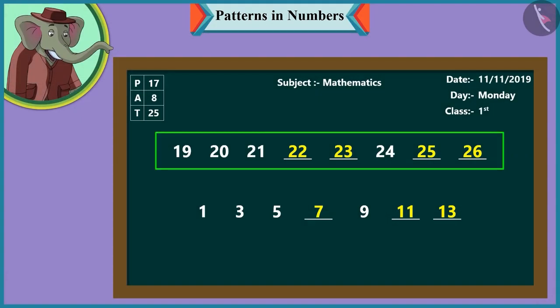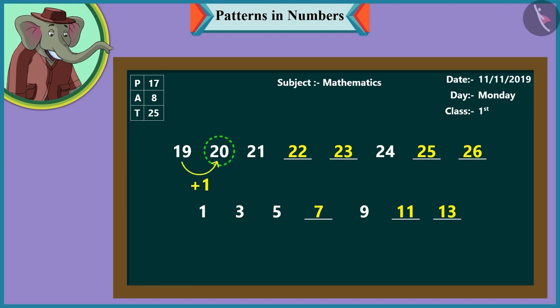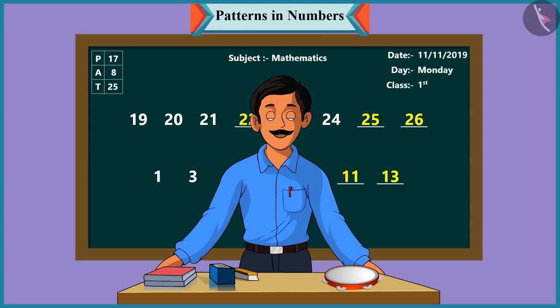Children, here in the first number pattern, one has been added to each number to take it forward. Like adding one to nineteen makes twenty, and adding one to twenty makes twenty-one. And in the next pattern, two has been added to each number to proceed with the pattern. Like adding one and two makes three, and adding two to three makes it five. Children, tomorrow we will see more number patterns.